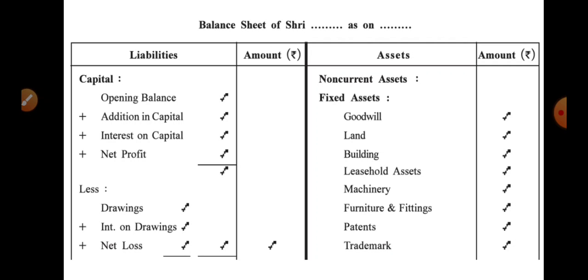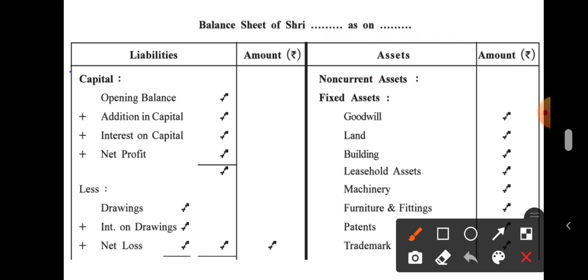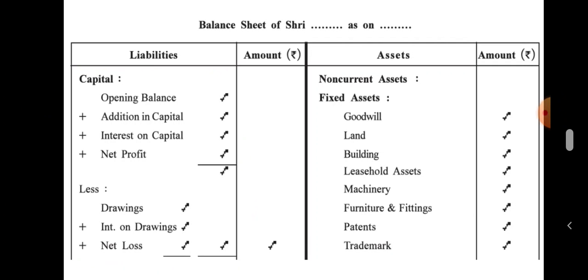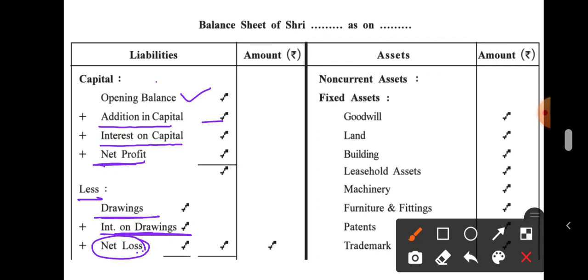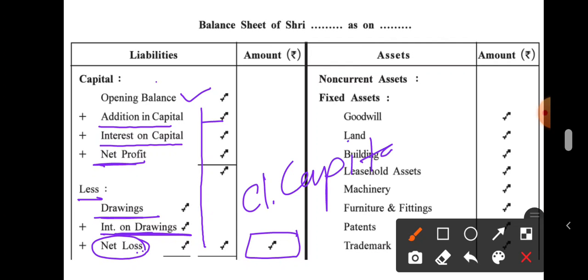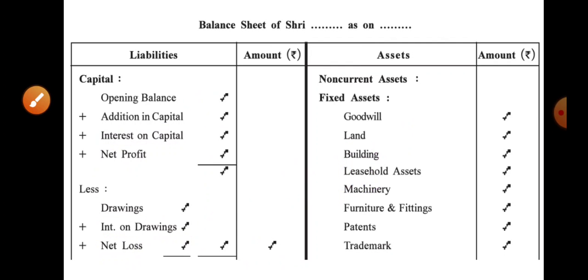Whenever you make a balance sheet, you keep a portion for capital. First you write the opening balance of capital; if there is an addition to capital, add it. Interest on capital is added, net profit from P&L account is also added. Drawings are subtracted, interest on drawings is subtracted, and if there is a loss, that is also subtracted. The remaining balance is called closing capital.